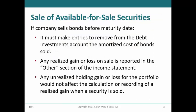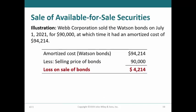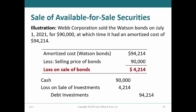When a company sells bonds prior to maturity, they remove the debt at amortized cost and recognize any gain or loss on the sale in the other income section of the income statement. The unrealized holding gain or loss on the portfolio does not affect the recording of the realized gain when the security is sold. Web Corporation sold the Watson bonds on July 1, 2021 for $90,000 when the bonds had an amortized cost of $94,214. To record the entry, Web debits cash for $90,000, loss on sale of investments for $4,214, and credits debt investment for $94,214.